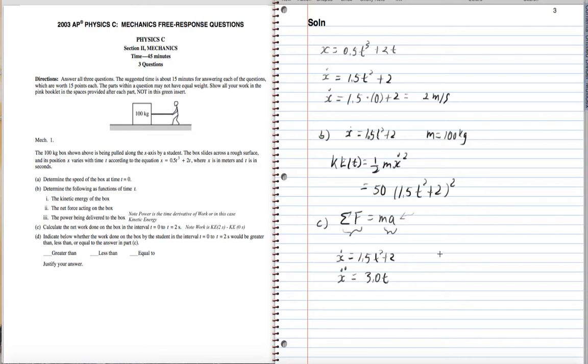So the net force acting on the box is a function of time. F is m times a, F net, and that's going to be equal to 100 times 3.0 times t, which is 300 t.